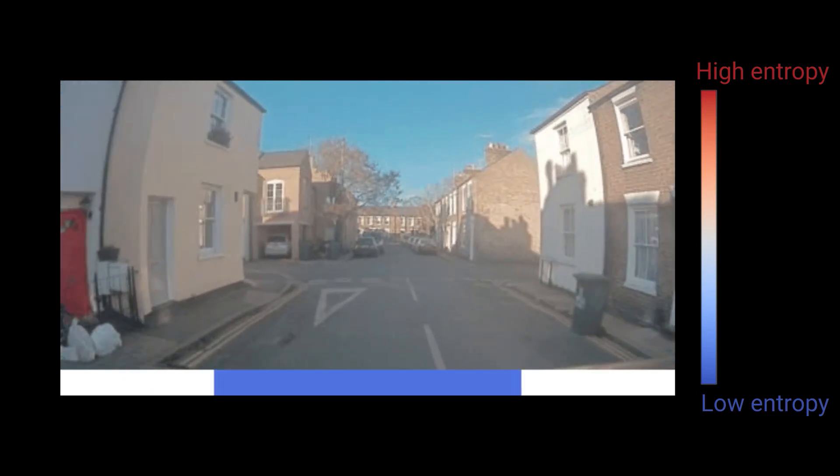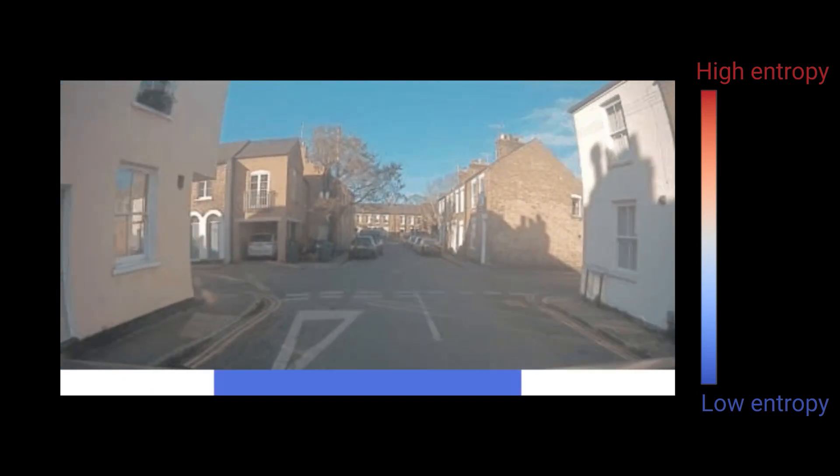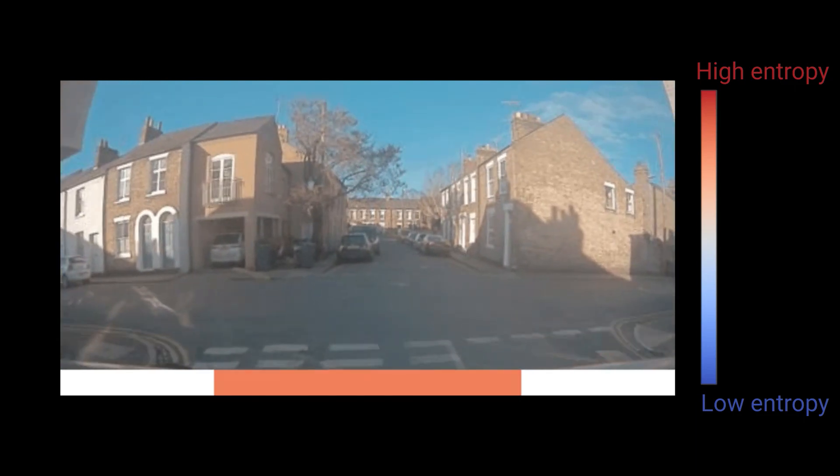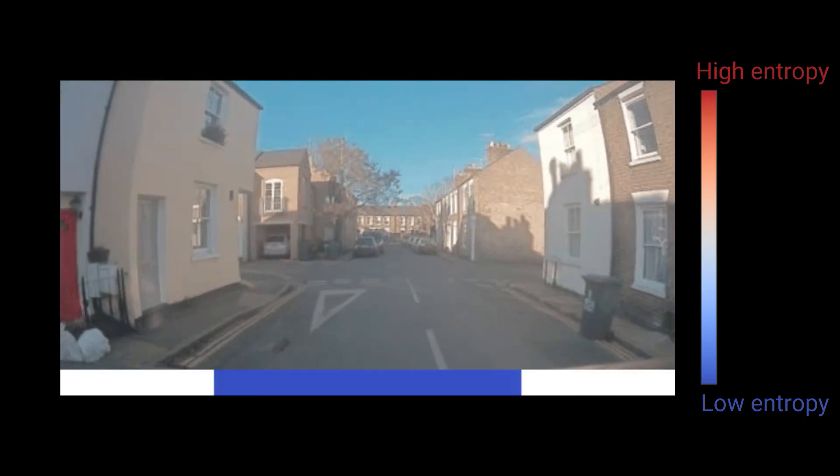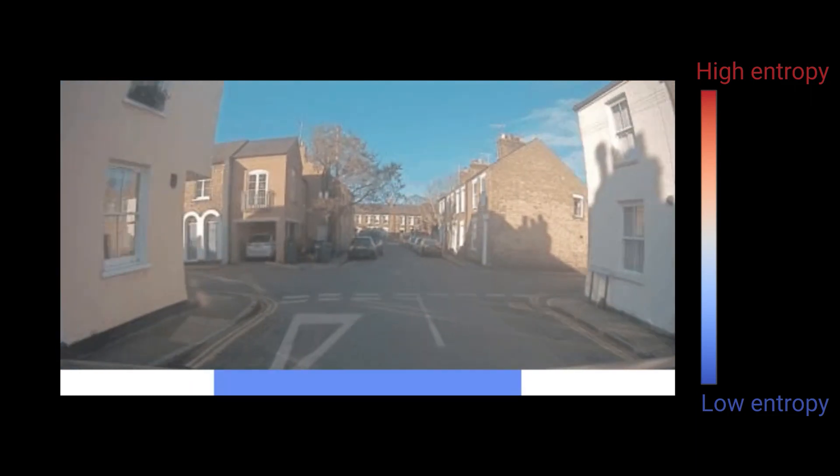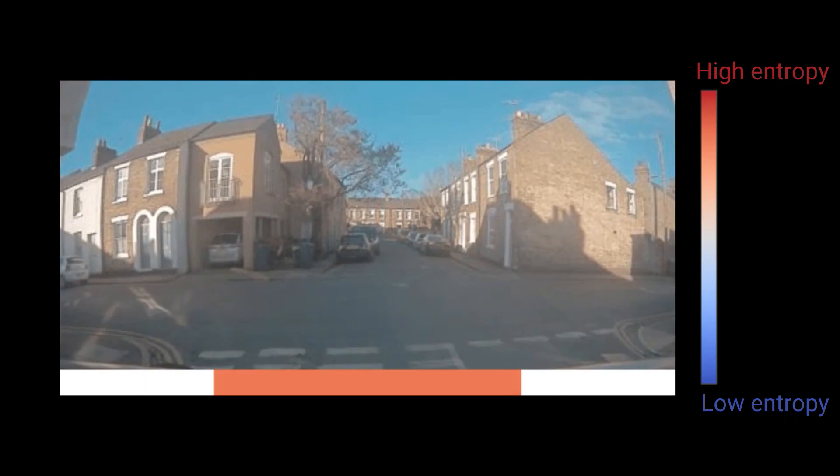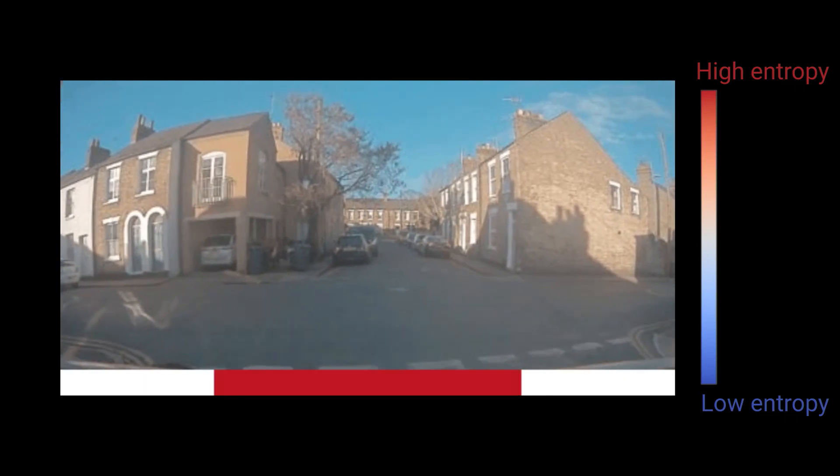Let us visualize at the bottom of the image the differential entropy of the present distribution, characterizing how unsure the model is about the future. We notice that as we approach the intersection, the network understands that the future is getting more and more diverse, which is represented through the entropy growing from low in blue to high in red.